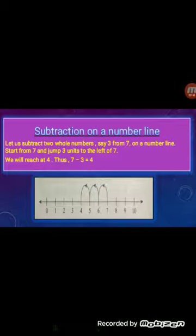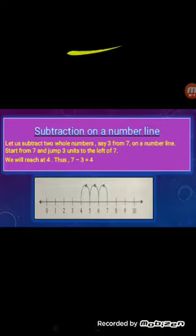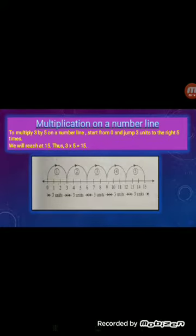Now we will study how to subtract two whole numbers on a number line. Let us subtract 3 from 7. Start from 7 and jump 3 units to the left. We will reach at 4. So we can say 7 minus 3 is equal to 4.